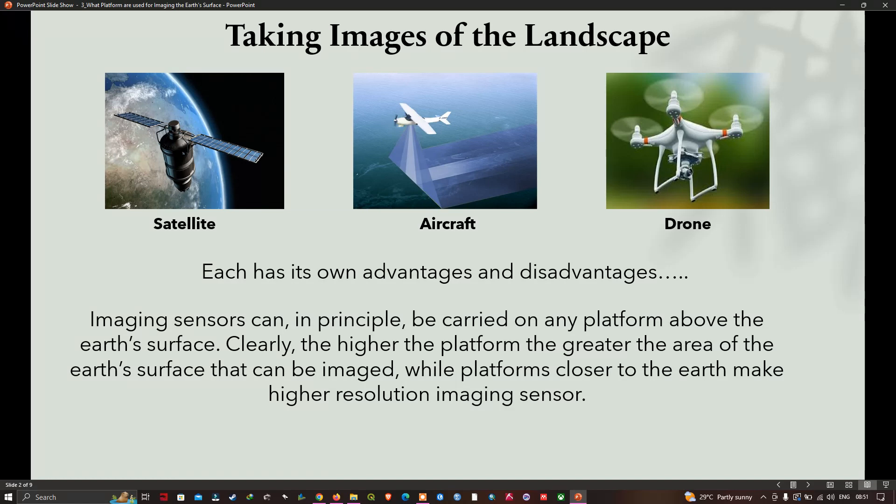Higher spatial resolution could be possible with platforms closer to the earth's surface. That immediately sets the satellites apart from the other two: aircraft and drone. By using spacecraft platforms, it is technically feasible to image the whole of the earth's surface in a particular time frame. Aircraft and drone missions by comparison are not global imagers but tend to be focused on a mission specific area of interest.